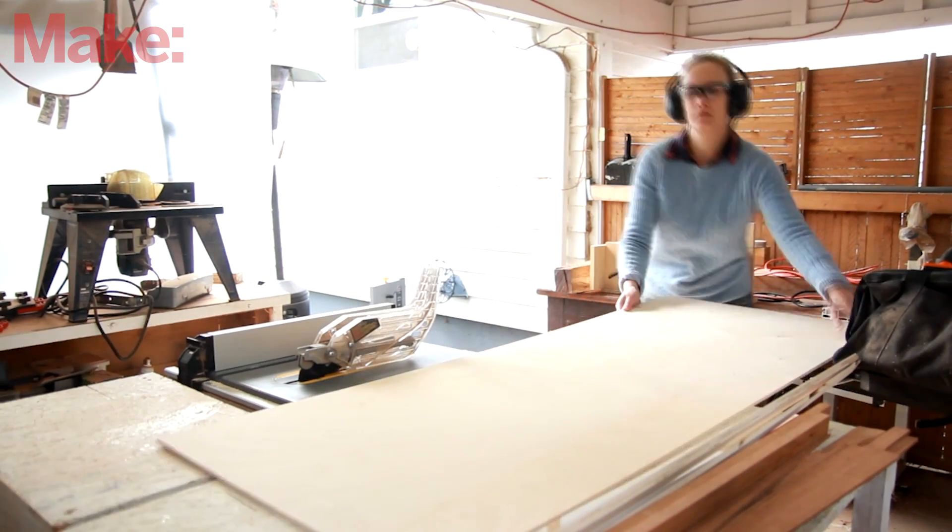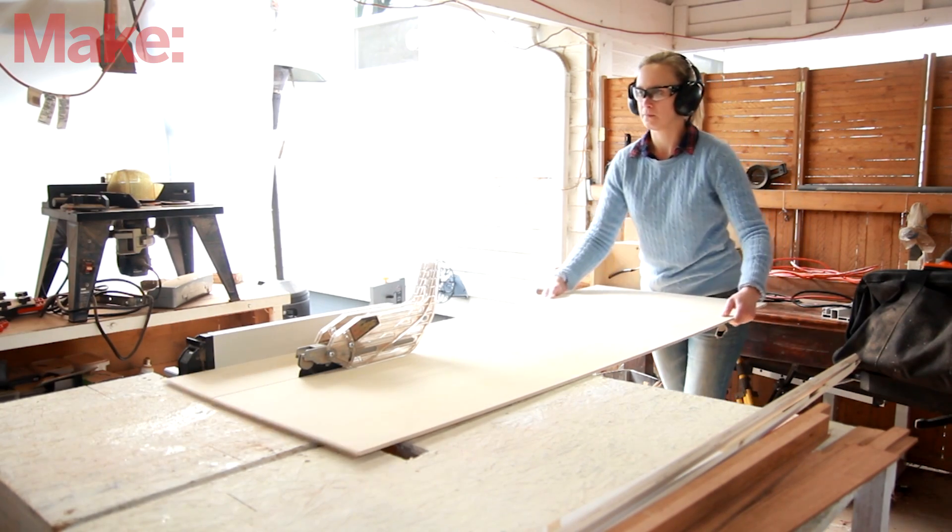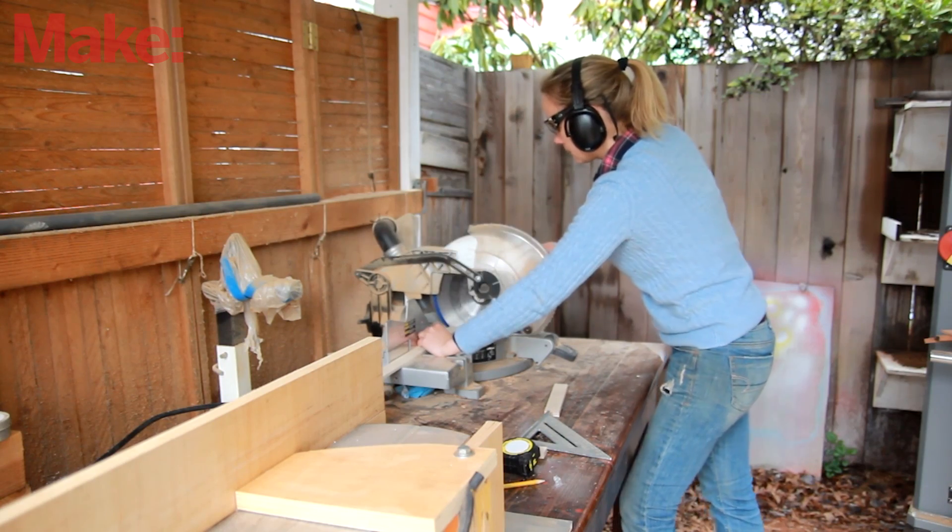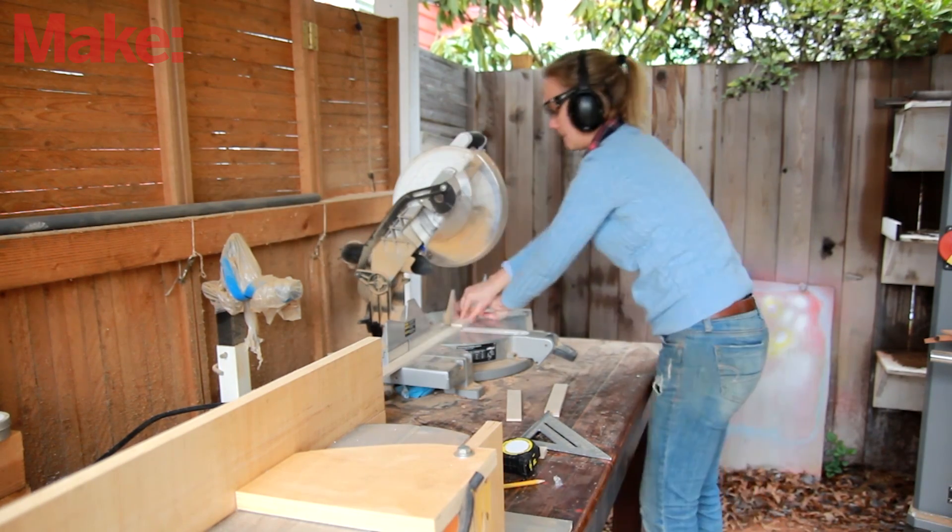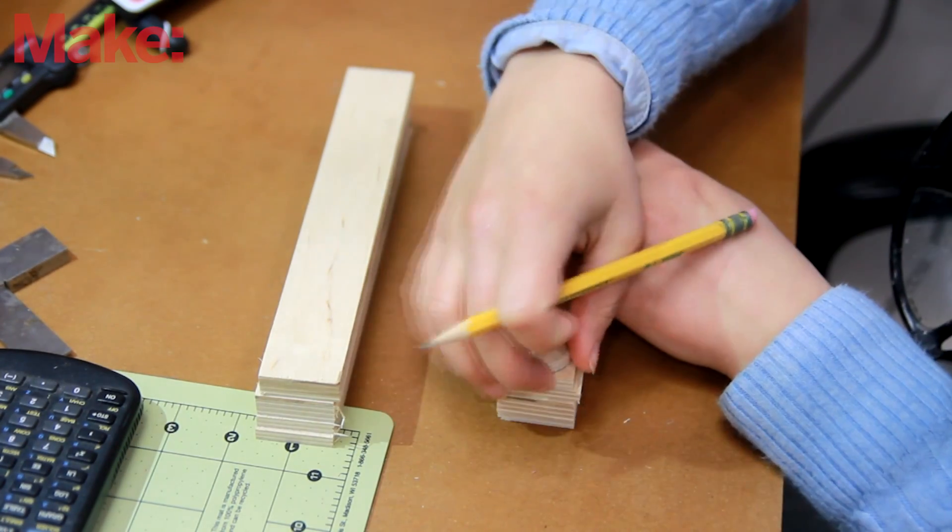For the body, I'm using some Baltic birch plywood, cutting up some sections here on the table saw and some shorter pieces here on the miter saw. The whole body is made up of these narrow sections that connect together. Once I had them all cut up, I rounded the corners.